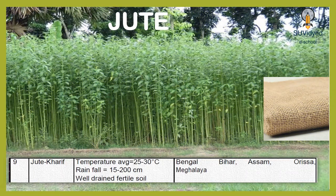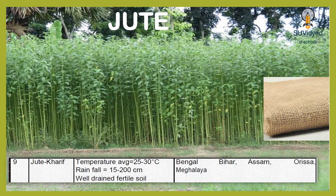Jute is another fibre crop. It is also grown in Kharif season in India. It requires temperature on average 25 to 30 degrees Celsius and rainfall between 150 to 200 cm. It grows well in well-drained fertile soil. In India, jute is grown in West Bengal, Bihar, Assam, Odisha and Meghalaya.